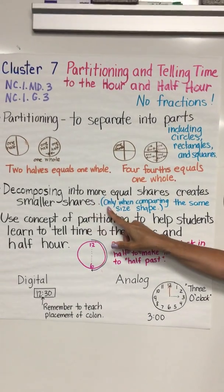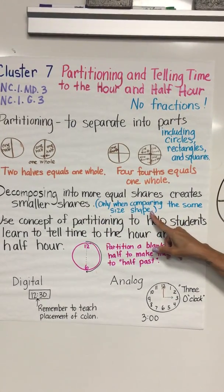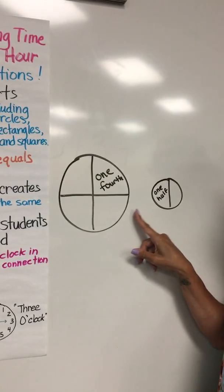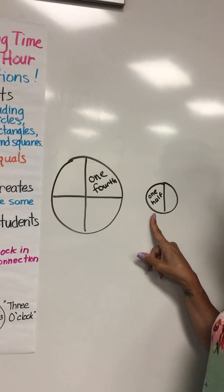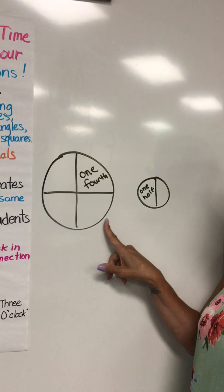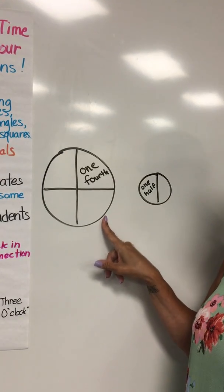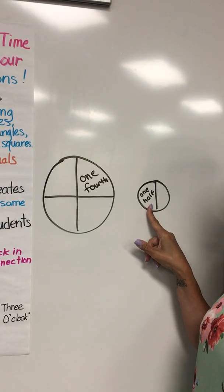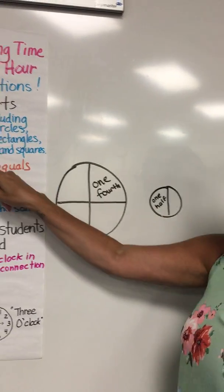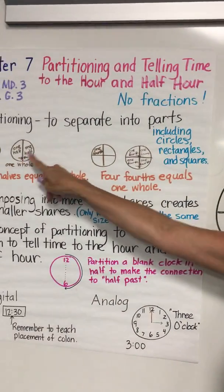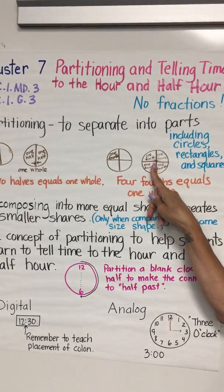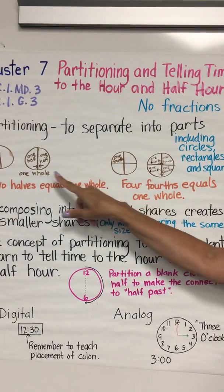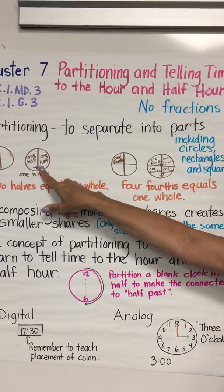A very important concept coming out of this cluster is that decomposing into more equal shares creates smaller shares. Please note this applies only when comparing the same size shape. Here is an illustration: if we compare a circle partitioned into halves and a circle partitioned into fourths using equal shapes, it is clearly seen that one fourth is a smaller piece or share than one half.